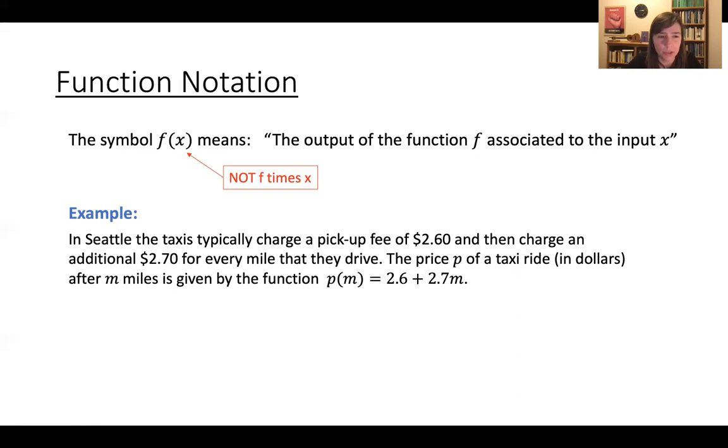So, okay, you have this function. You might be asked to do something like evaluate p parentheses 1. What does that mean? Well, p of 1 is the output if the input is 1. So it's the price if you're driving 1 mile. And so to calculate that, plug in 1 for the miles. So p of 1 is just 2.6 plus 2.7 times 1, which is 5.3.